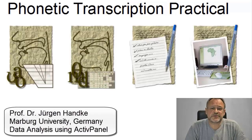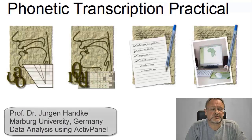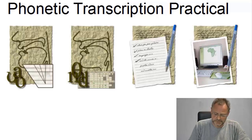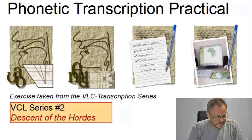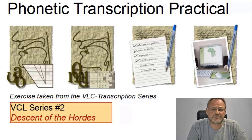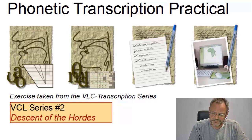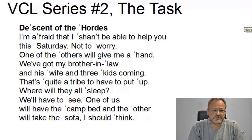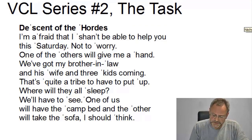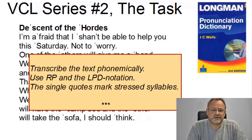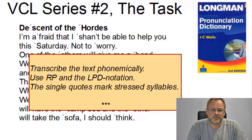Welcome back to our series of videos that explains the techniques of phonetic transcription using an actual example. The exercise I'm going to deal with this time is exercise number two, entitled 'Descent of the Hordes', taken from the VLC transcription series. We have to transcribe the text phonemically using the LPD notation, which you can find in the Longman Pronunciation Dictionary, and our phonological reference dialect is received pronunciation.